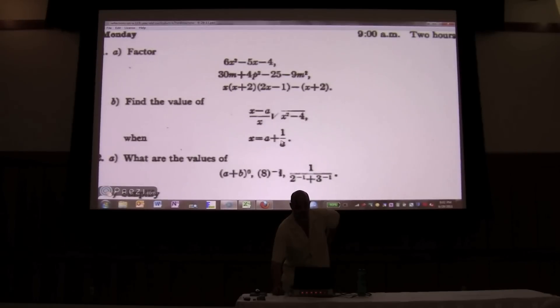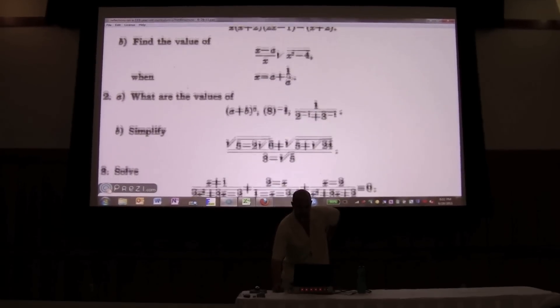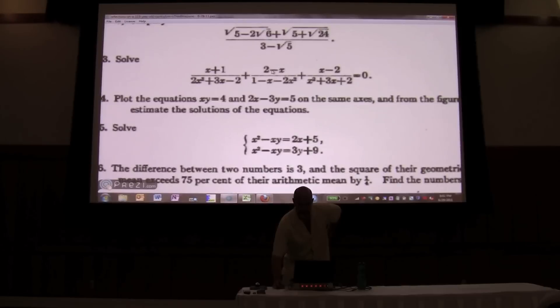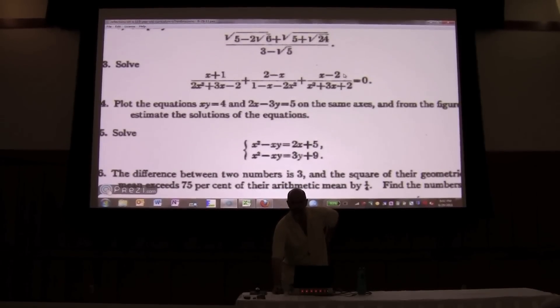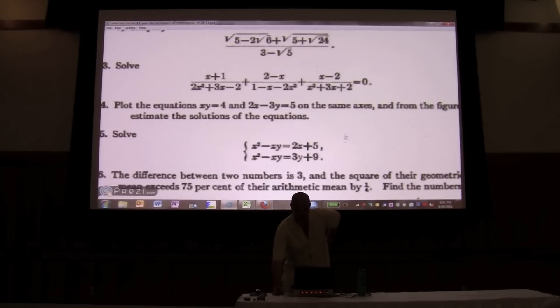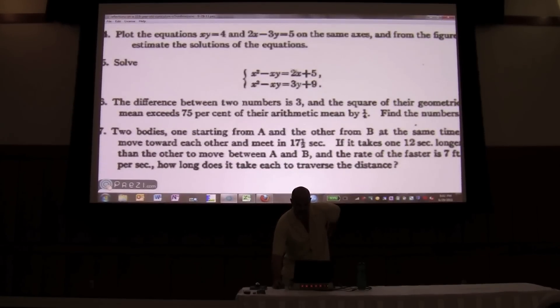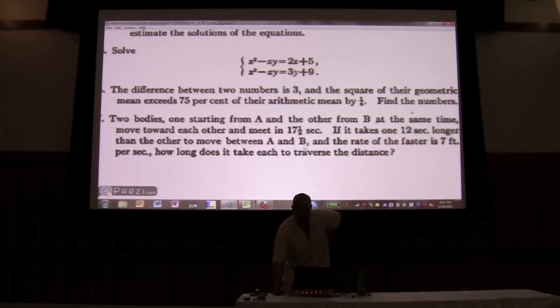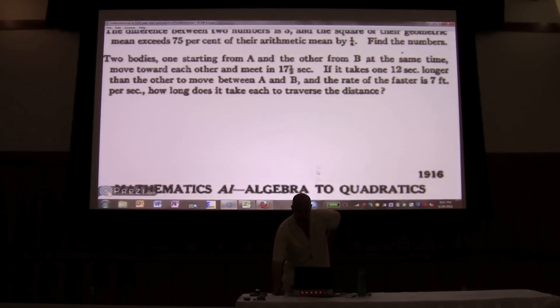Two minus x. X minus two. Right? Factoring out the minus one. Systems of nonlinear equations. So that's the easiest of the three tests.